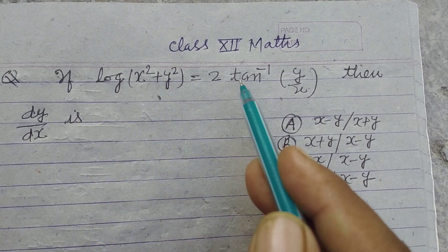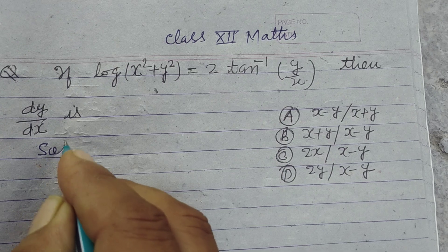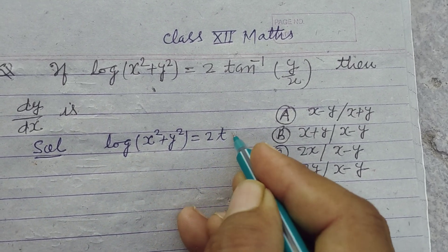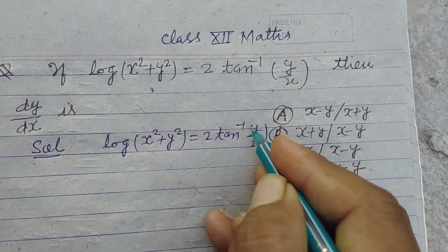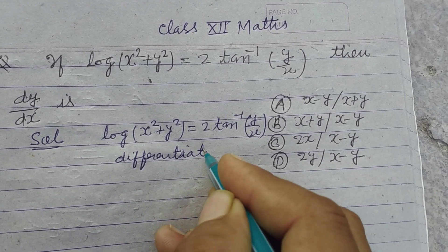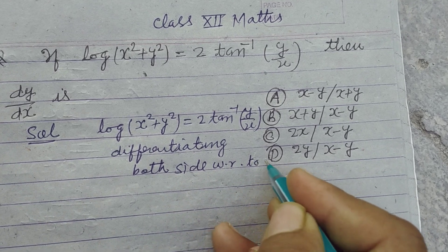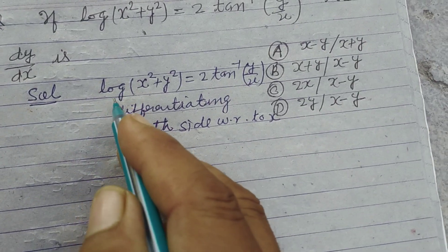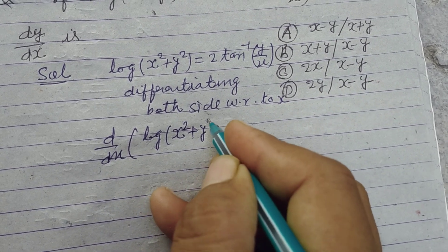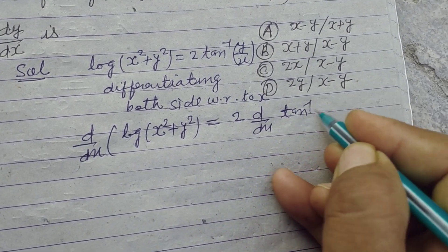If log(x² + y²) = 2·tan⁻¹(y/x), find dy/dx. Here we have log(x² + y²) = 2·tan⁻¹(y/x). Differentiating both sides with respect to x: d/dx of log(x² + y²) = 2·d/dx of tan⁻¹(y/x).